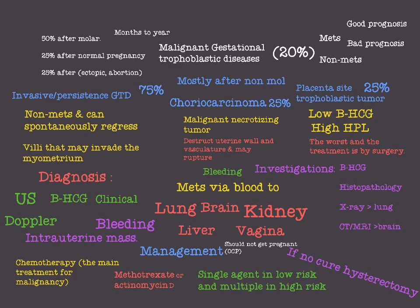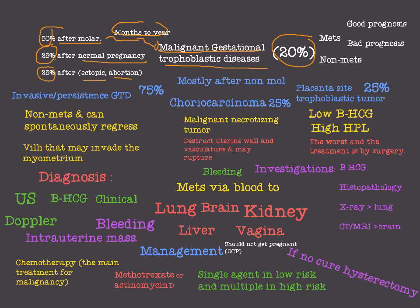In the last video I talked about benign gestational trophoblastic disease, and in this video I'm going to talk about malignant gestational trophoblastic diseases. They constitute about 20% of all GTD. About 50% of them happen after molar pregnancy, approximately months to a year after molar pregnancy. Malignant GTD can also happen after 25% of normal pregnancies and after 25% of ectopic pregnancies or abortions.